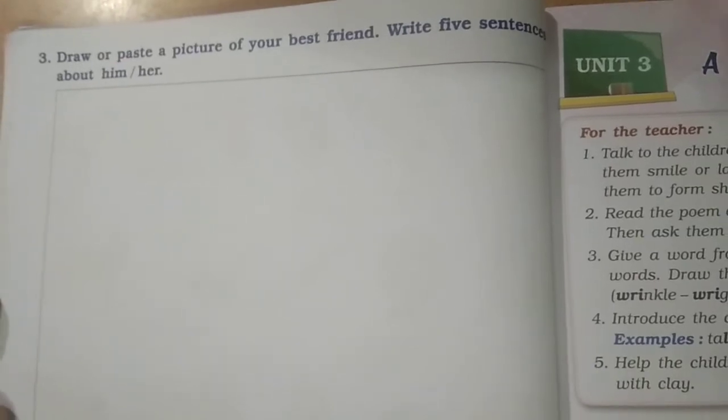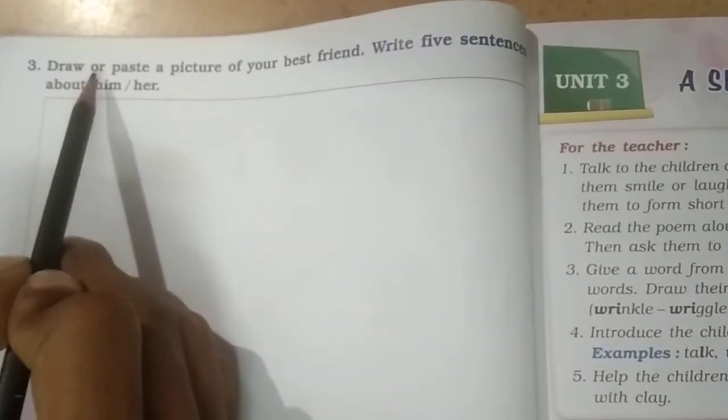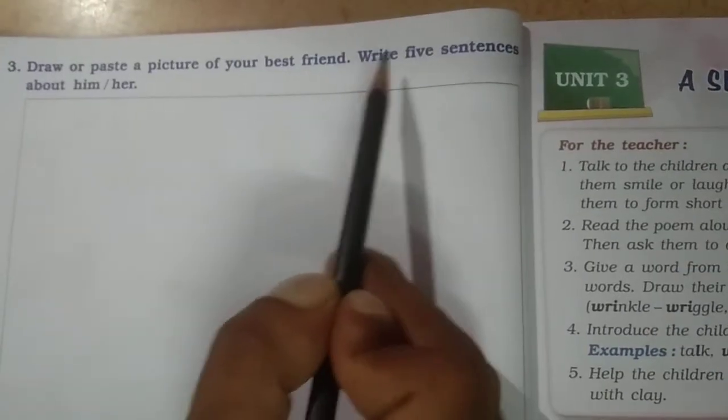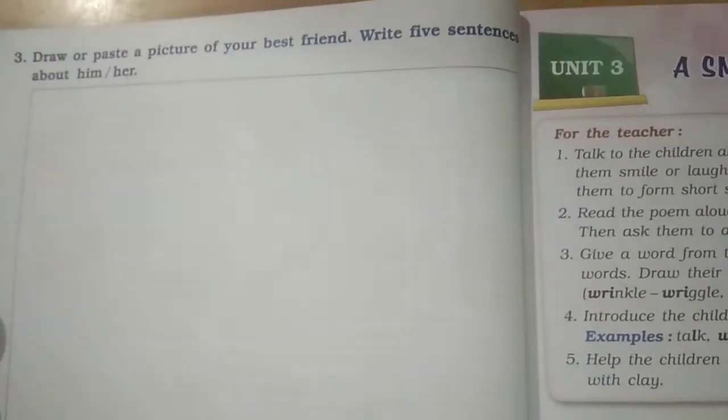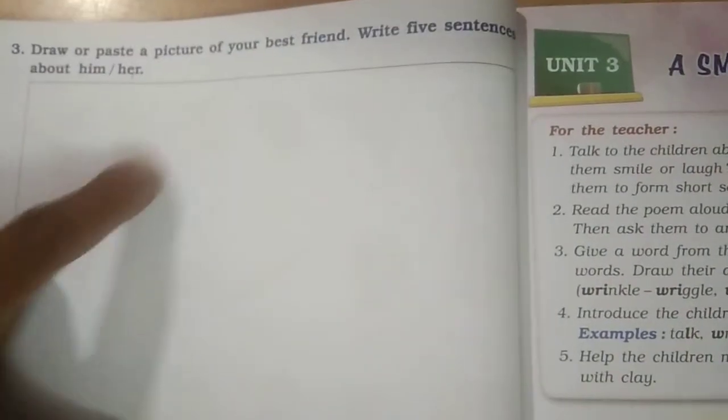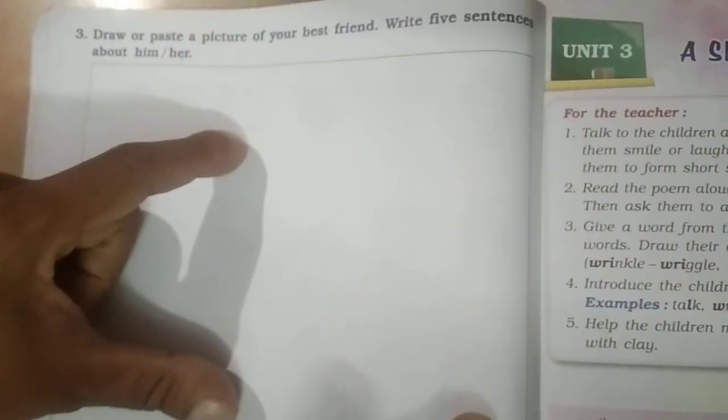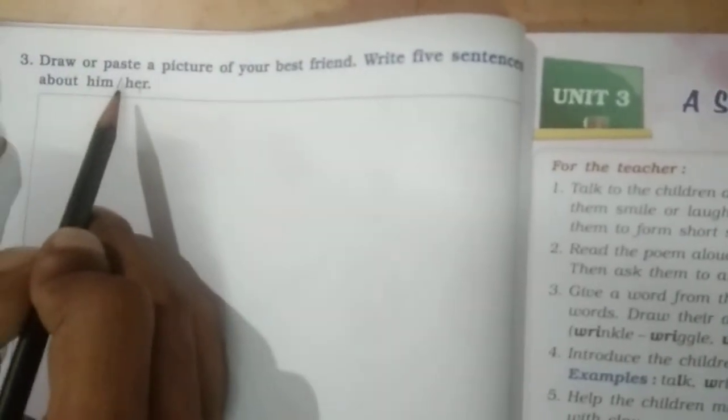This is the last exercise you can see on your screen: draw or paste a picture of your best friend and write five sentences about him or her. You all have friends. If you cannot draw a picture, write down: my friend's name is Keval, then he is a good boy or she is a good girl, he studies with me — all these things. Just write down five sentences about him or her.